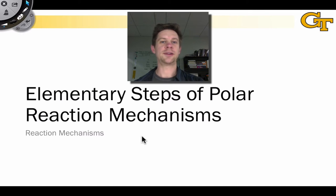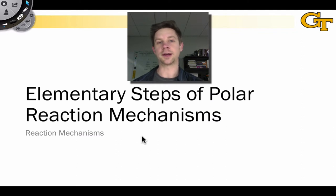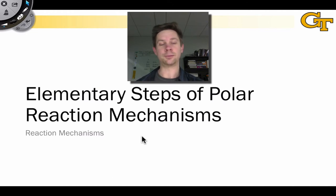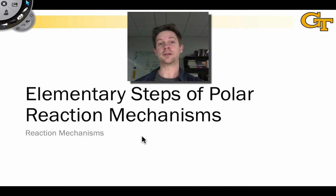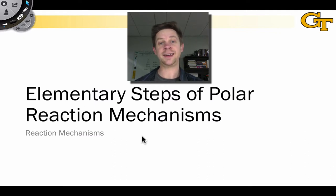We've seen that we can think of elementary steps of organic reaction mechanisms as involving overlap between filled and empty localized molecular orbitals. Because the numbers and types of localized molecular orbitals are limited, the number of possible elementary steps or electron flows is limited. In this series of videos, we're going to drill down into the nuts and bolts of mechanisms and look at the 10 most common types of electron flow in organic reaction mechanisms — the 10 so-called elementary steps of polar organic reaction mechanisms.